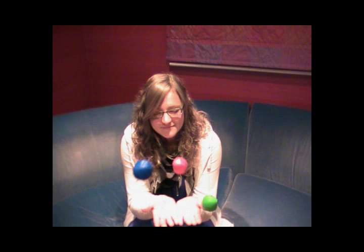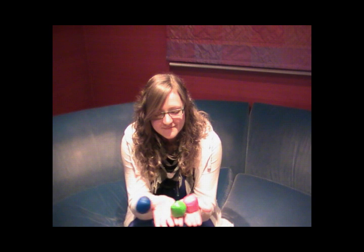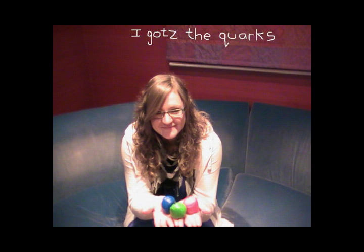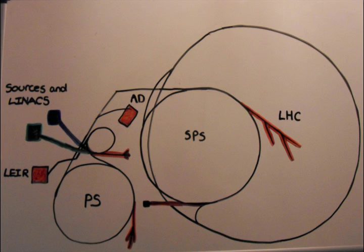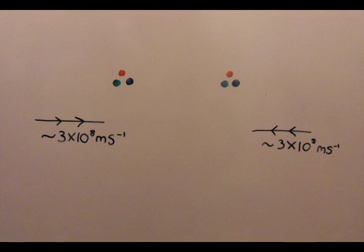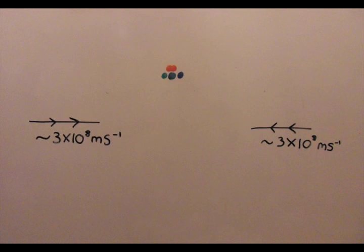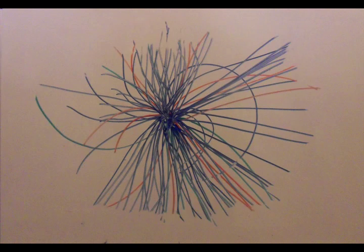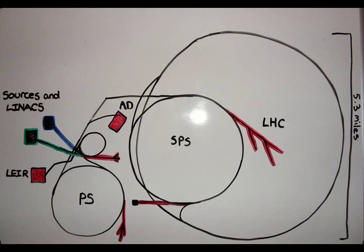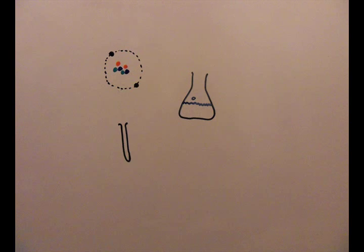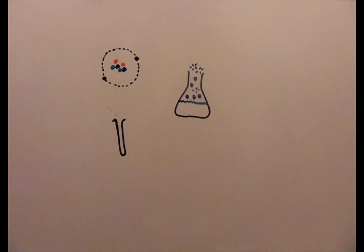But how do we know all this about atoms, as we can't see subatomic particles, even with an electron microscope? Well, the Large Hadron Collider in Geneva was designed for this very purpose. By accelerating protons to near the speed of light and smashing them into each other, we can break them apart to find out what they're made of, which is how we discovered the quark. The LHC is the largest and most powerful particle accelerator in the world, and has led to some of the most profound scientific discoveries today.